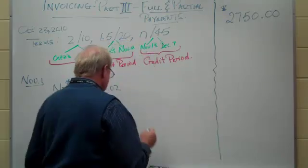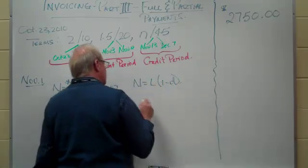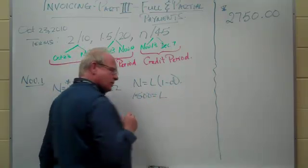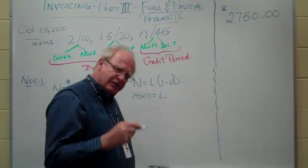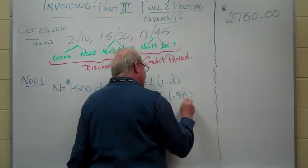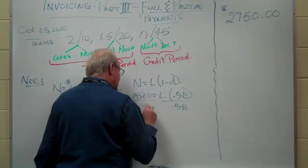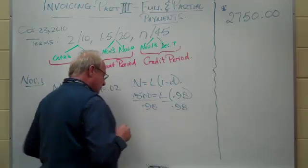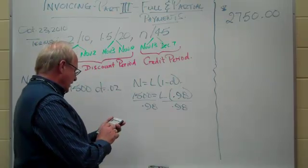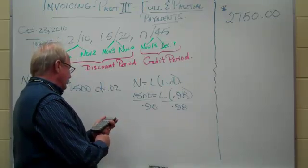The formula is always the same: Net equals List times (1 minus the discount). Net is $1,500, and that equals the list which is what we are trying to find out. 1 minus a 2% discount is 0.98. So we get rid of the 0.98 by dividing both sides by 0.98 — note that's different from what happened in part two. So we have $1,500 divided by 0.98, which gives us $1,530.61.